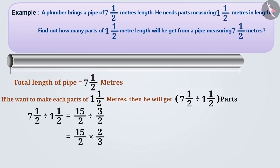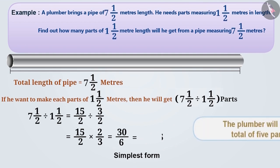To solve this, we will first multiply the numerators and the resultant numerator will be 30. We will then multiply the denominators and the resultant denominator will be 6. Then we simplify it. If we divide the numerator by the denominator, we get the simplest form as 5 by 1, that is 5. So, we can say that the plumber will get 5 parts in total.